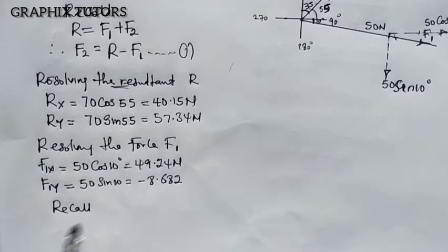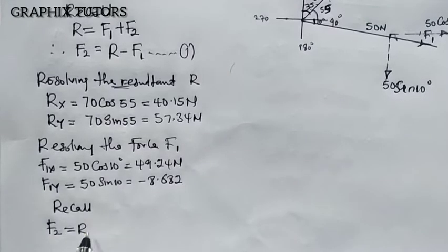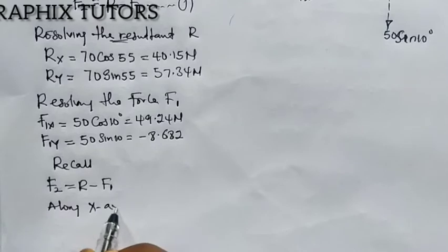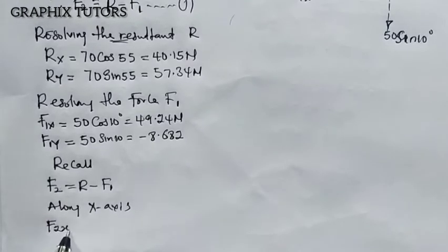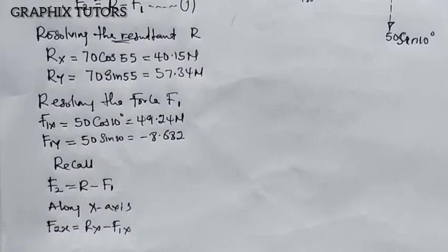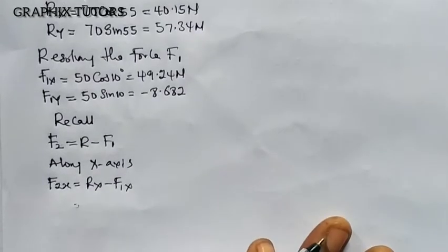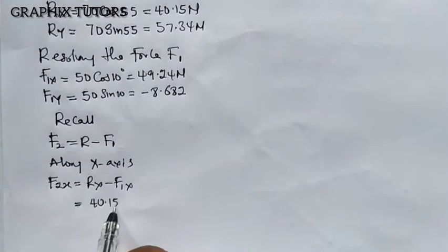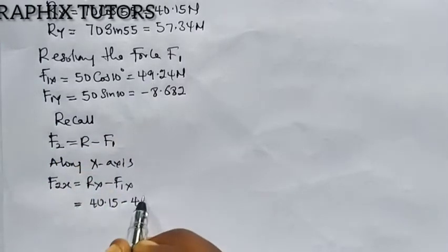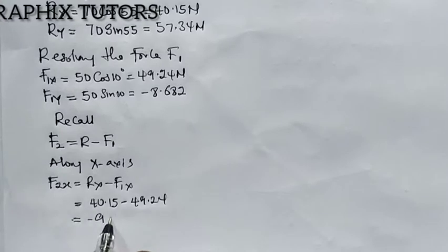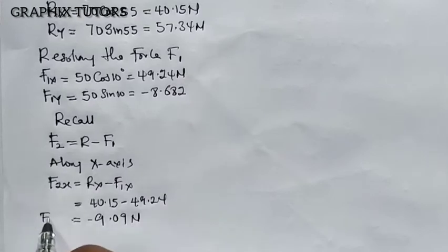Recall from equation one that F2 equals R minus F1. So along the x-axis, F2x equals Rx minus F1x, taking all the x components. This gives us 40.15 minus 49.24, which equals minus 9.09 newton. That is my F2x.